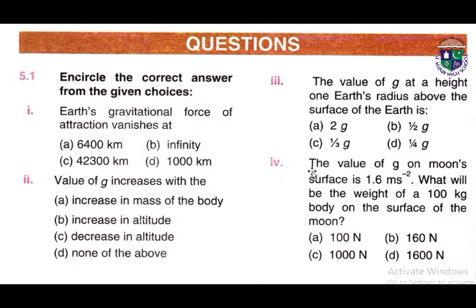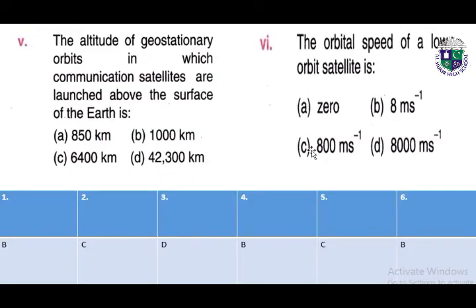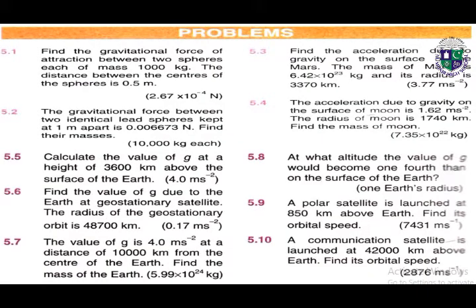Part 4: the value of g on the moon's surface is 1.6 m/s². What will be the weight of a 100 kg body on the surface of the moon? Correct answer is B: 160 newtons. Part 5: the altitude of geostationary orbits in which communication satellites are launched above the surface of the earth — correct answer is C: 6400 kilometers. Part 6: the orbital speed of a low orbit satellite — correct answer is B: 8 m/s. Those are all the answers for the MCQs.